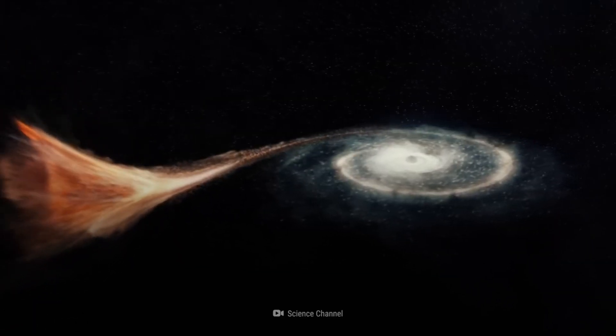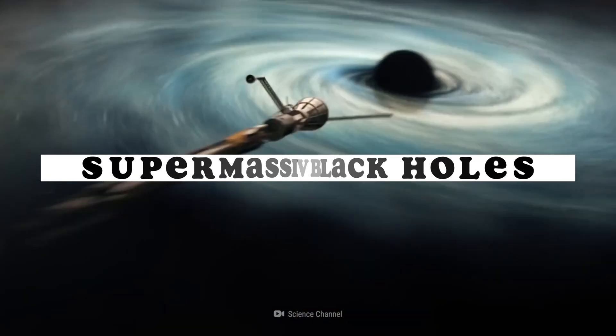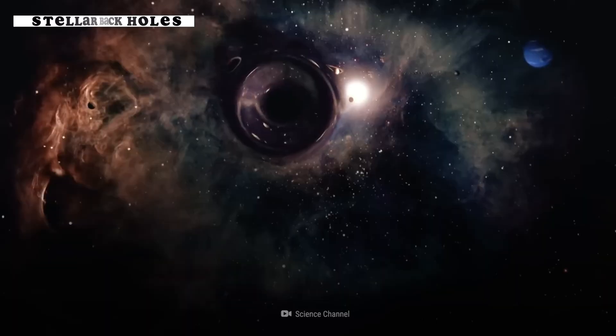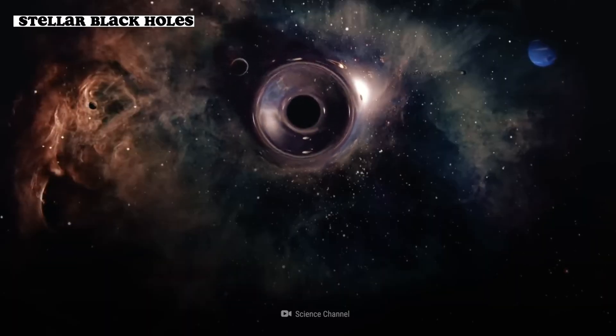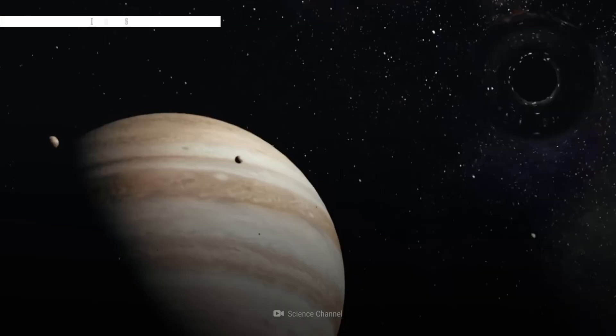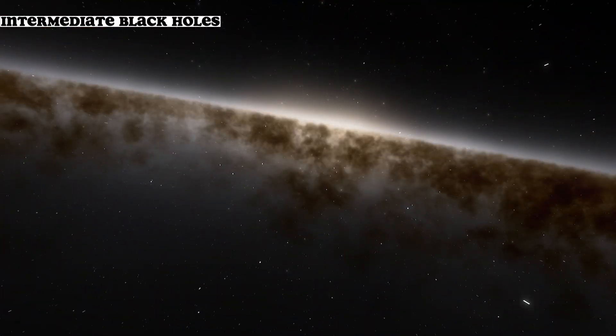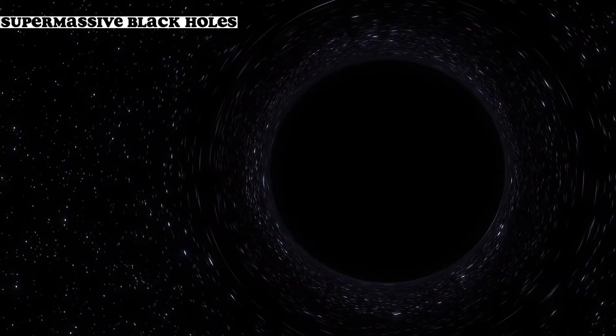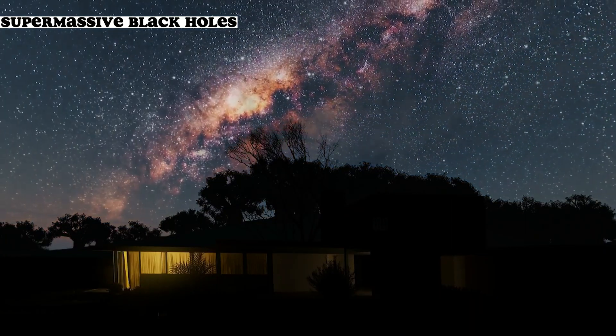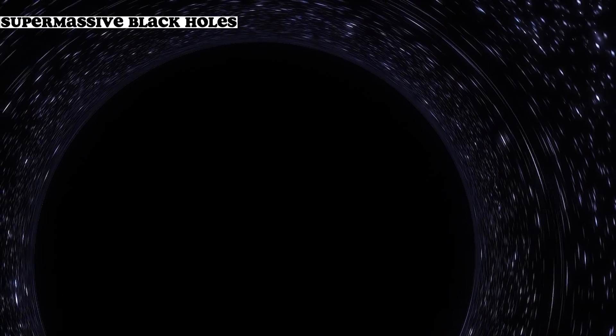There are several different types of black holes, including stellar black holes, intermediate black holes, and supermassive black holes. Stellar black holes are the smallest and most common type, with masses that are typically several times greater than the mass of the Sun. Intermediate black holes have masses that range from hundreds to millions of times the mass of the Sun. And supermassive black holes are the largest type, with masses that can be billions of times greater than the mass of the Sun. These behemoths can be found at the centers of galaxies, including our own Milky Way.